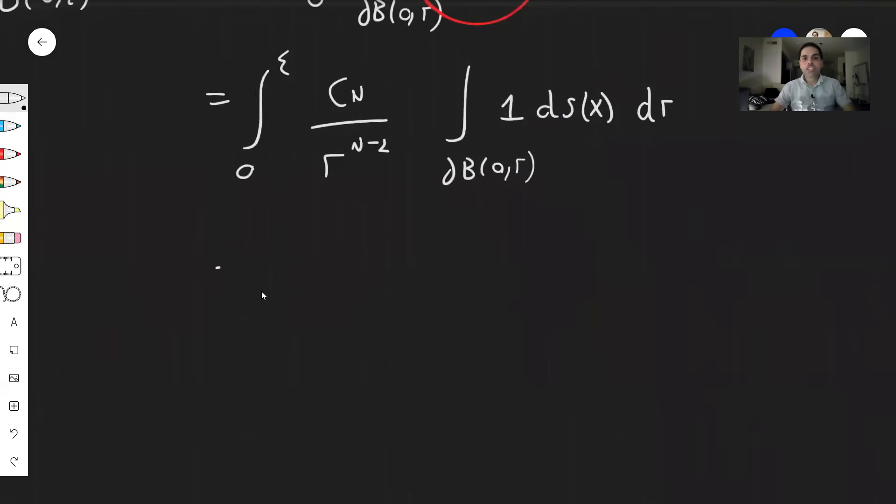And again, just like the previous example, if you integrate the function 1, then the integral just becomes the surface area, in this case, of this sphere. Now, just a little recap, in case you don't know, and there is another video on this,